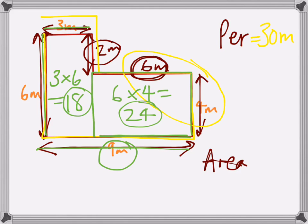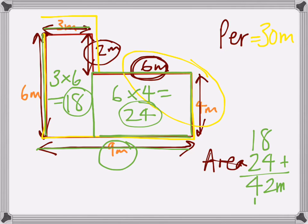So we've got our two areas. Let's add those together: eighteen for the smaller one and twenty-four for the larger. Eight and four makes twelve, and adding up the tens we get forty-two. The unit would be metres squared.